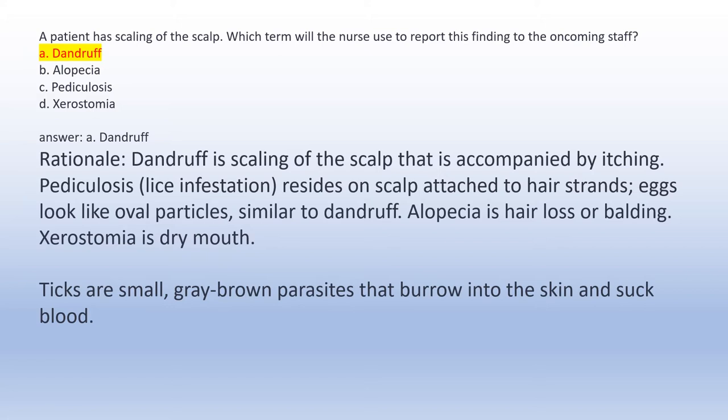Answer A: Dandruff. Rationale: Dandruff is scaling of the scalp that is accompanied by itching. Pediculosis lice infestation resides on scalp attached to hair strands; eggs look like oval particles similar to dandruff. Alopecia is hair loss or balding. Xerostomia is dry mouth. Ticks are small gray-brown parasites that burrow into the skin and suck blood.